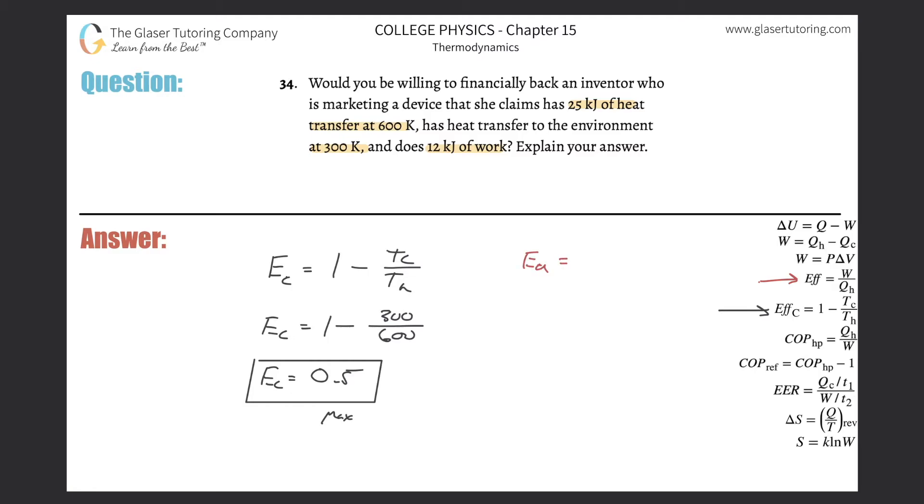I'll call it E sub A, is going to be equal to the work divided by the heat added to the engine. So they basically told us the work is going to be 12 kilojoules. I can leave it in kilojoules as long as I'm consistent with the unit on the bottom. They also told me kilojoules here, so that's 25.